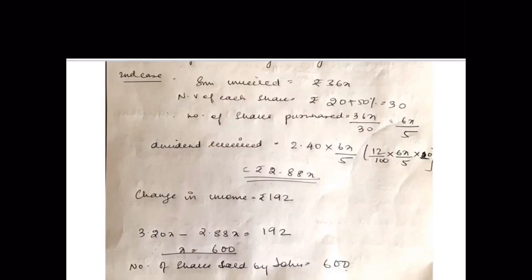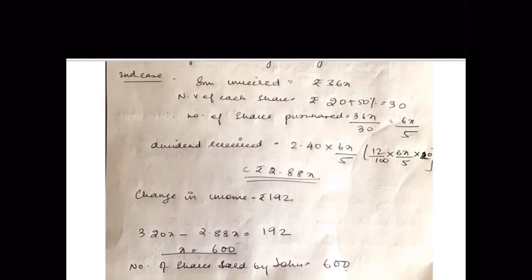Dividend from the second investment: 12 upon 100 into 20 into 6x by 5 gives 2.88x. Subtracting the two dividends: 3.20x minus 2.88x equals 192, so 0.32x equals 192, giving x equals 600. Therefore John sold 600 shares, reinvested the proceeds, and got a lower dividend than he would have received by keeping his original shares.